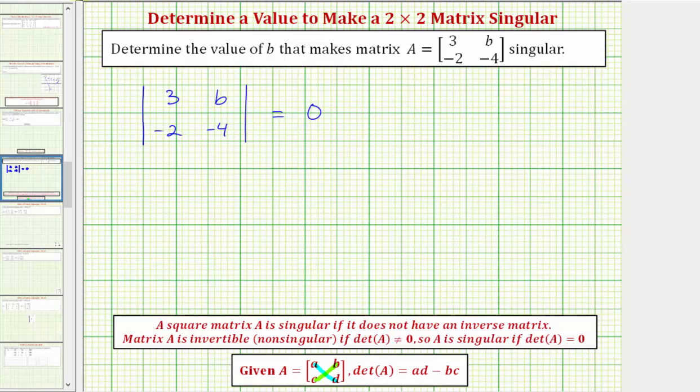So for our determinant, we would have three times negative four minus b times negative two. So three times negative four minus b times negative two must equal zero. So we have negative twelve. This is going to be plus two b equals zero.